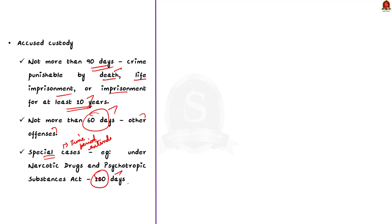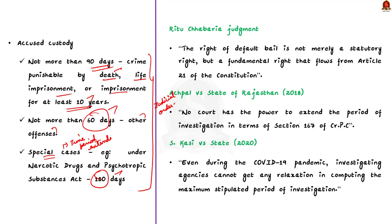These provisions demonstrate that the extension of time for investigation is not automatic but requires a judicial order. Now with this understanding, we will see the background of the article. The Supreme Court of India made an order on May 1st which has caused concern among legal professionals. This interim order basically sought to recall the court's own decision in a case called Ritu Chabariya versus Union of India.